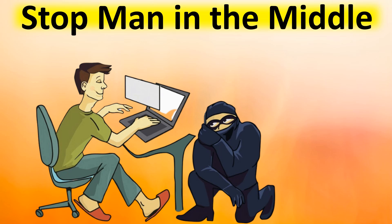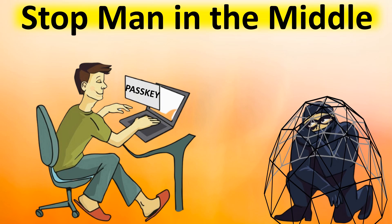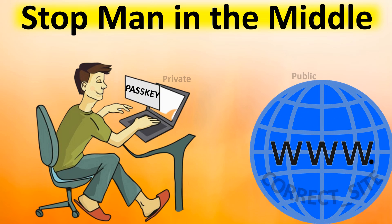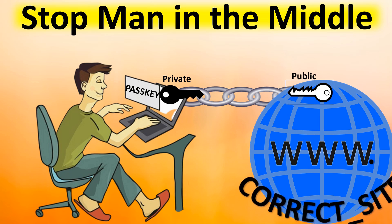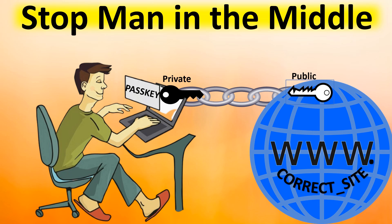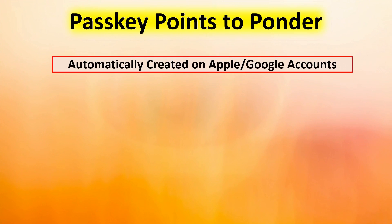What's important to note is that nothing was done on your part for either the Google account or the Apple ID — these passkeys were automatically created. You have a secure private key stored on the Android phone and the iPhone for account login. You can use these to log in via the web.